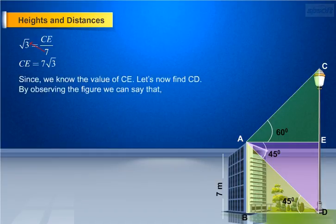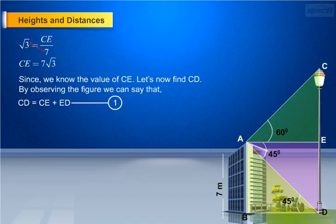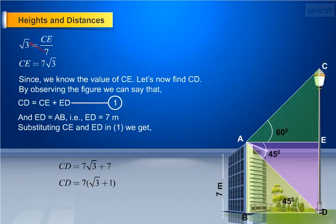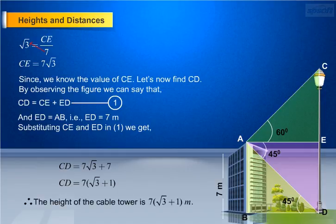Since we know the value of CE, let us now find CD. By observing the figure, CD equals CE plus ED — equation 1. Since ED equals AB, ED equals 7 meters. Substituting CE and ED values in equation 1, we get CD equals 7 root 3 plus 7. Taking 7 as common, CD equals 7 into (root 3 plus 1). Therefore, the height of the cable tower is 7(root 3 + 1) meters.